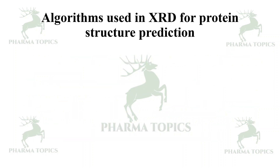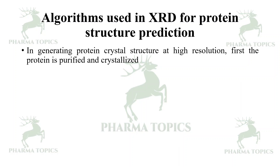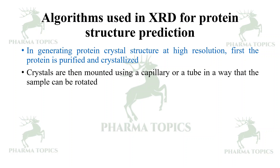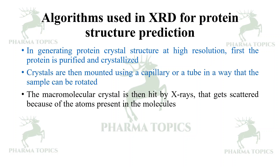The electron density map is interpreted in terms of an atomic model with the help of semi-automatic computational techniques. In generating the protein crystal structure at high resolution, first the protein is purified and crystallized. Crystals are then mounted using a capillary or tube in a way that the sample can be rotated. The macromolecular crystal is then hit by X-rays and gets scattered because of the atoms present in the molecules.